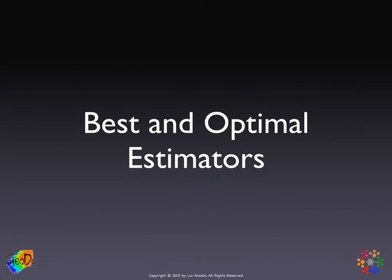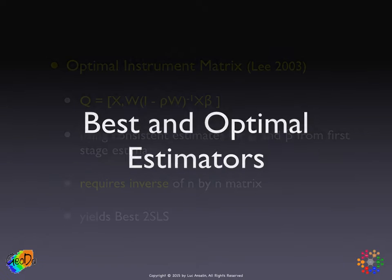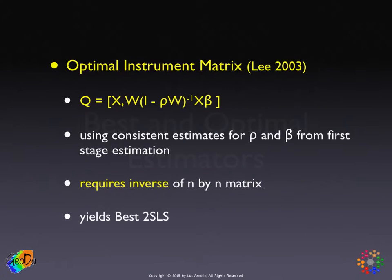In these last few slides in this section, I want to say a few things about this notion of best and optimal estimators. As we saw, spatial two-stage least squares is consistent, but it's not the most efficient.